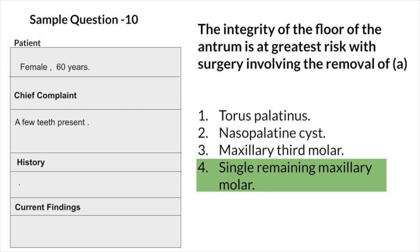Because of the options listed, the single remaining maxillary molar is nearest to the floor of the maxillary sinus. The remaining edentulous alveolar ridge provides little bone support against alveolar fracture with avulsion of the antral floor during removal of this tooth. So the answer is single remaining maxillary molar.